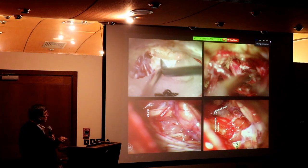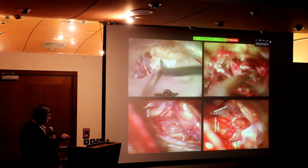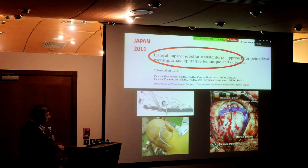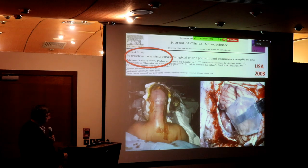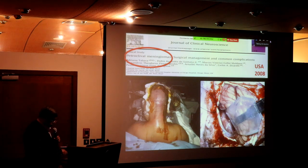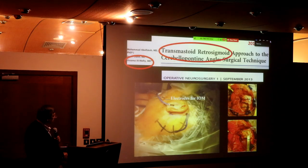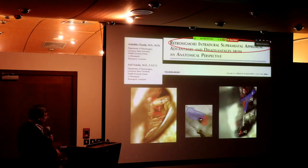He and his group believe that petroclival meningiomas are best removed via the simple and safe retrosigmoid approach. He does not want to go into pre-sigmoid and combined sigmoid. Retrosigmoid for him is enough, and I personally believe in this and adopt it. You drill the suboccipital bone to see more and to see these nerves in the petroclival region. Papers from Japan support the same approach — retrosigmoid. This is the workhorse approach for these kinds of tumors.